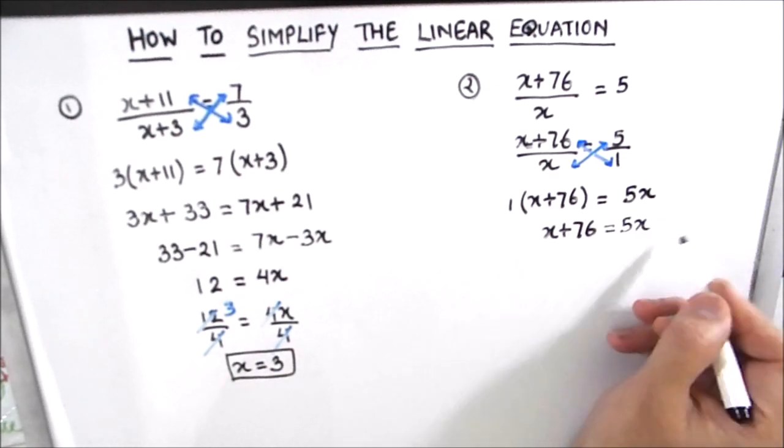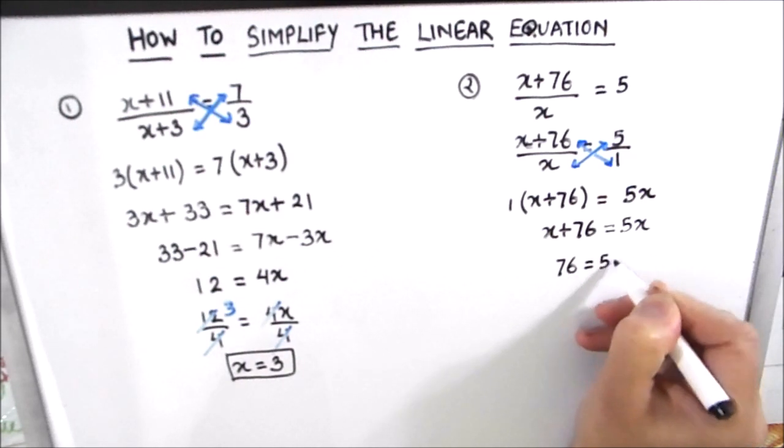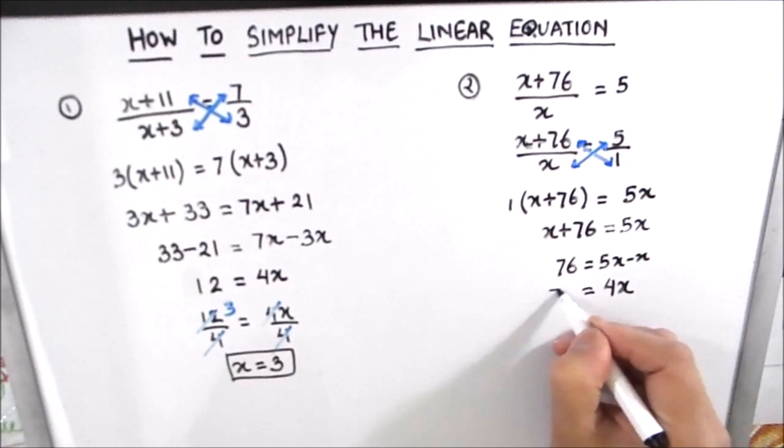Now we will transpose x to the right hand side. So this is 76 is equal to 5x minus x. Now 5x minus x is 4x is equal to 76.